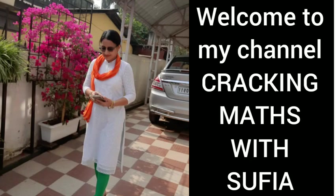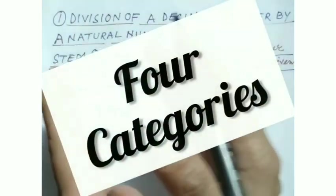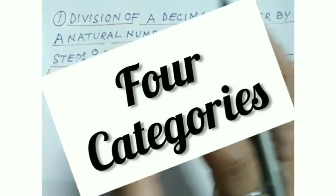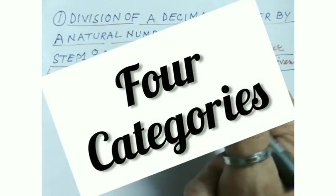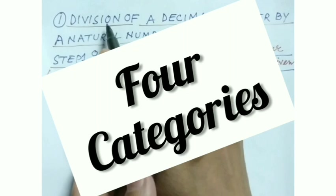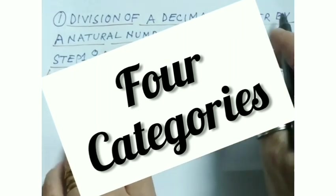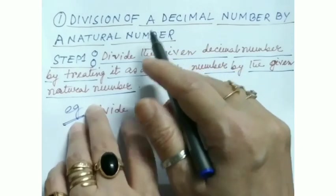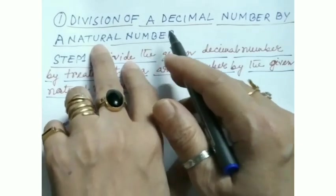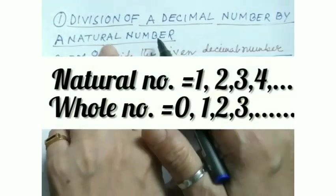Division of decimal numbers. I have divided the division of decimals into four categories. Category number one is division of a decimal number by a natural number.